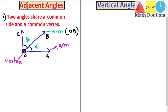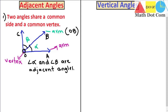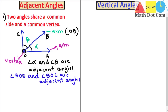So angle alpha and angle beta are adjacent angles. We can also say that angle AOB is adjacent to angle BOC — you always put the vertex point in the center. So angle AOB and angle BOC are adjacent angles. This is how adjacent angles are defined.